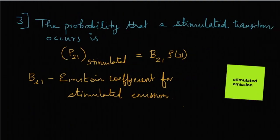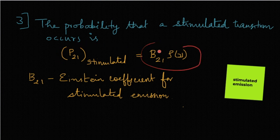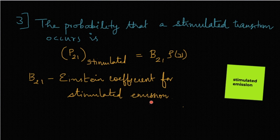The probability that a stimulated transition occurs is given by P21 = B21·ρ(ν). B21 is the Einstein coefficient for stimulated emission and is a constant characteristic of the properties of the energy states E1 and E2.